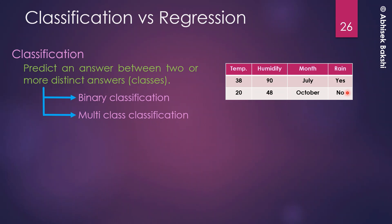Depending on the number of classes in the dataset, we divide classification into two parts: binary classification, where there are only two discrete levels; and multi-class classification, where the number of discrete values can be three, four, or more.